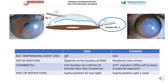In cases of DMD, the most common tamponading agent used is air, except in cases of long-standing detachment, failed reattachment with air, or tears in the Descemet's membrane, where expansile gases like C3F8 are used. In hydrops, gases like C3F8 are most commonly used. Regarding injection site: in DMD it depends upon the location of DMD, but in hydrops — since there is mostly central corneal edema — the site of injection is the peripheral clear cornea.